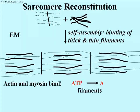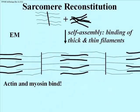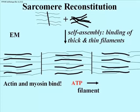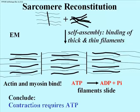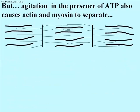Look what happens if you add ATP — it is hydrolyzed and the sarcomeres shorten. You can do this with a preparation of self-assembled sarcomeres, then look at the results in the electron microscope and see the shortened sarcomere. So we can now say that contraction does indeed require ATP, and in the process ATP is hydrolyzed.